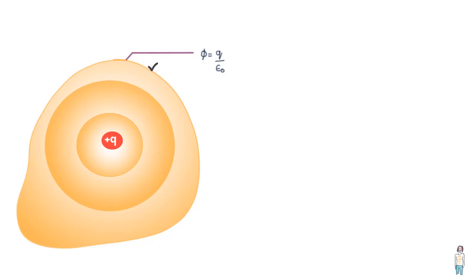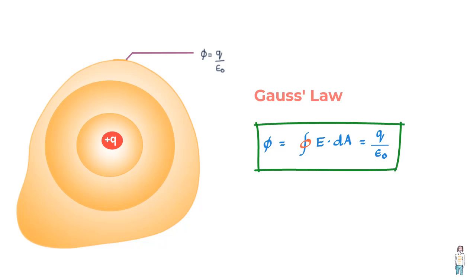So Gauss's law therefore can be written for any surface enclosing a charge as follows: electric flux is equal to the surface integral of dot product of E and dA, which equals Q upon epsilon naught. Or in other words, the flux through any surface that encloses a charge is equal to the value of the net charge inside the surface divided by epsilon naught.